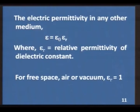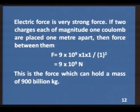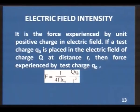The electric permittivity of any medium is written as ε = ε₀ × εᵣ, where εᵣ is the relative permittivity or dielectric constant. For free space, air, or vacuum, εᵣ = 1. The electric force is very strong — two charges of 1 coulomb each placed 1 meter apart experience a force of 9 × 10⁹ N, strong enough to hold a mass of 900 billion kilograms. Electrostatic force is one of the four fundamental forces in nature.